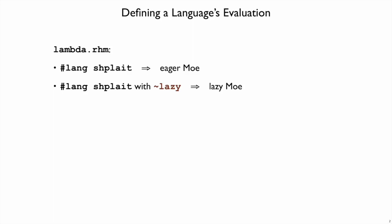We've seen how running our lambda interpreter in hashling shplait gives us an eager variant of the mo language. But if we run that same interpreter with tilde lazy added to get the lazy variant of shplait, we also get a lazy variant of mo. And that means lambda is not making eager evaluation explicit. We're deferring the choice to shplait.